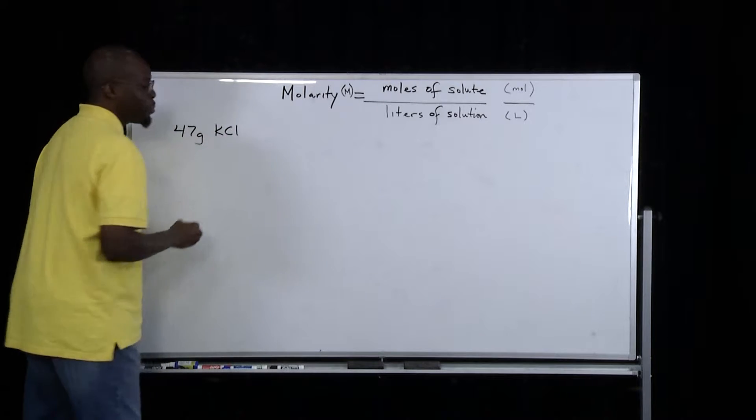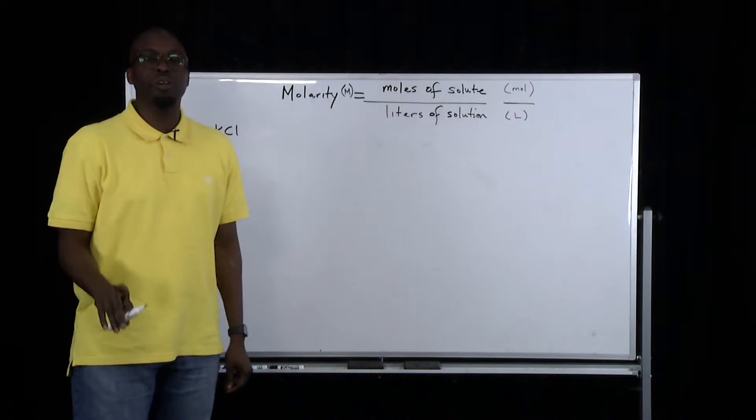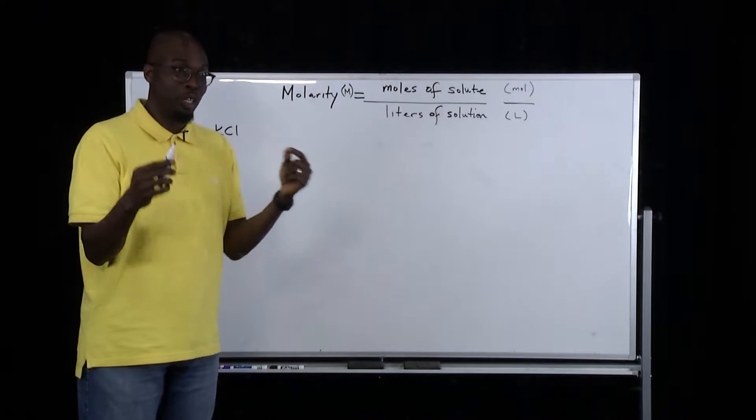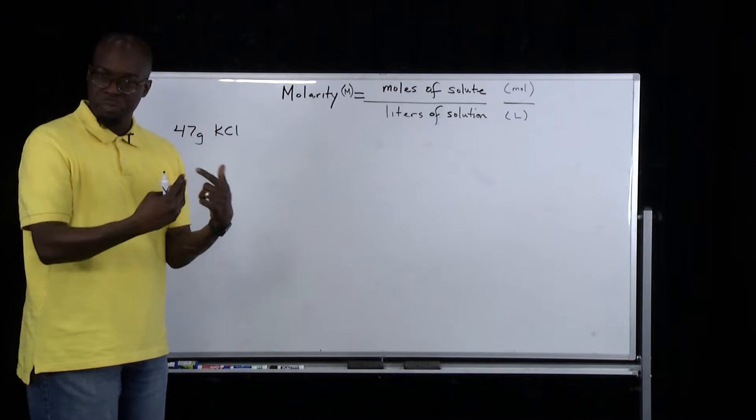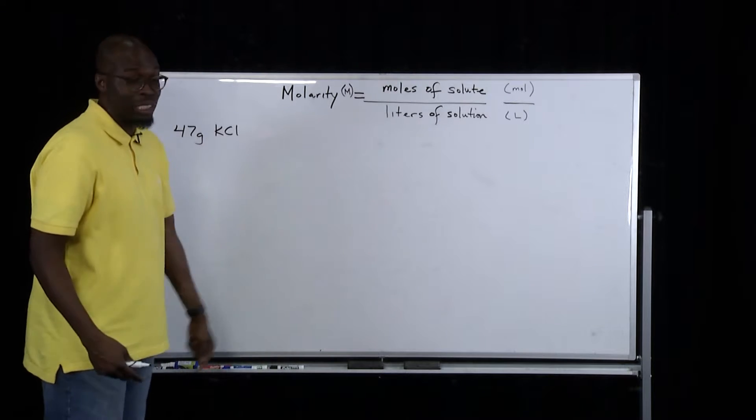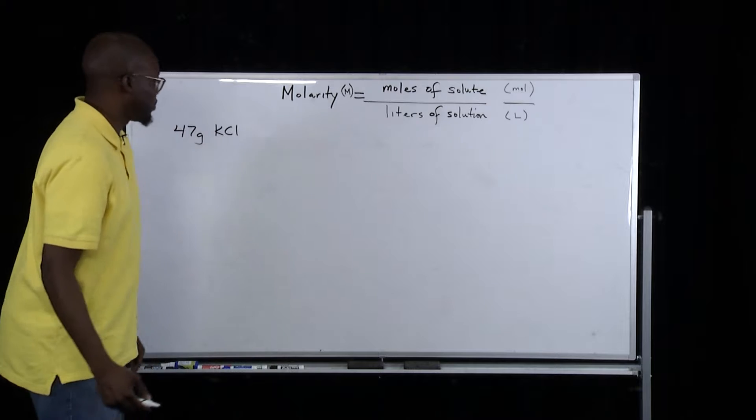If you remember from reading the problem, the potassium chloride is the solute. And we have to add as much solvent as that would give us 375 milliliters of solution.